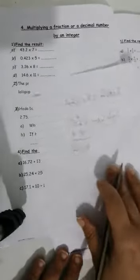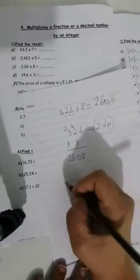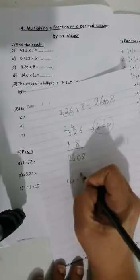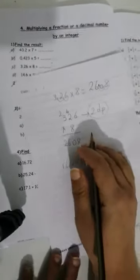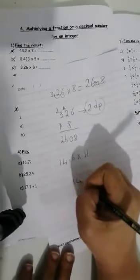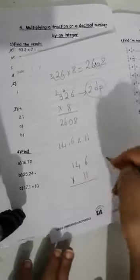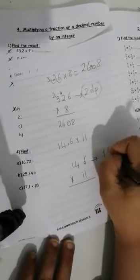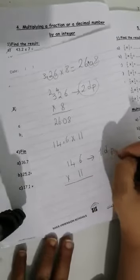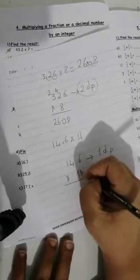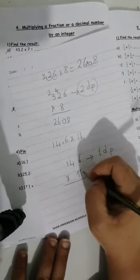Again, let's see number D. 14.6 times 11. Take it to the work out. 1, 4, 6 times 11. And here I will write one decimal place. Don't forget about it. So here, what will I do? Start with the first one.